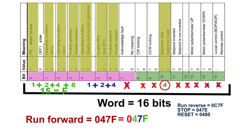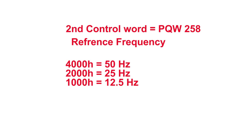These codes are listed in the VFD manual. To run in reverse, the code is 0C7F. To stop the VFD, the code is 047E. To reset the VFD when there is an alarm, we send 0480. These are the four most commonly used codes. The second control word — PZD/PKW address 258 in our case — is used for the reference frequency. If we send 4000 hex, the motor runs at 50 Hz; 2000 gives 25 Hz; 1000 gives 12.5 Hz.